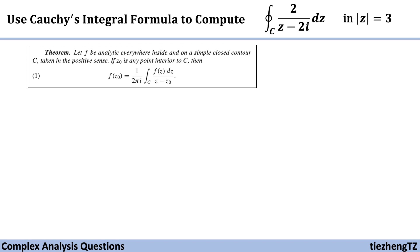So our domain z modulus equals 3. We know it is a circle, so it is a closed-contour. And this circle has the center at origin with a radius of 3.